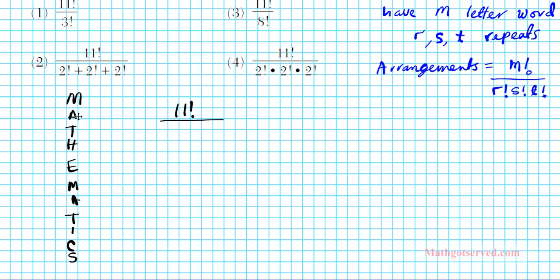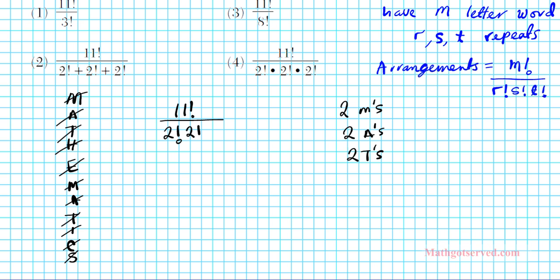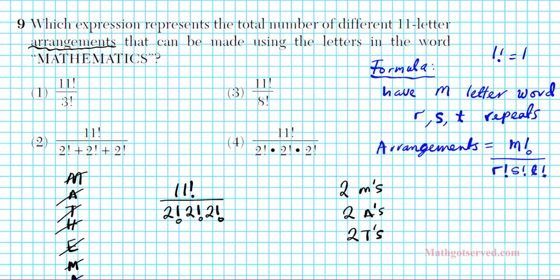How many m's are there? 1, 2 — we have 2 m's. How about a's? 1, 2 — we have 2 a's. How about t's? 1, 2 — we have 2 t's. H, e, i, c, s — each appears only once. So the only repeats are 2 m's, 2 a's, and 2 t's. We include in the denominator the factorials of those repetitions: 2 factorial for the m's, 2 factorial for the a's, and 2 factorial for the t's. Remember you multiply them — don't add them. The correct answer to question number 9 is option number 4.